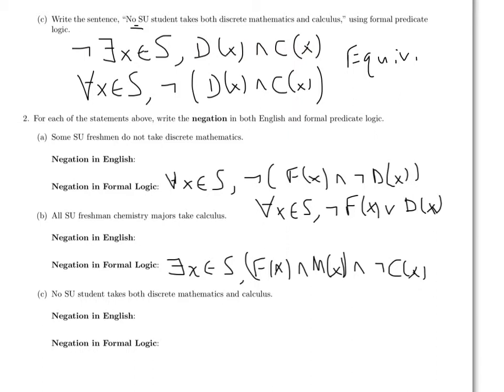So the negation of not there exists X in S is that there exists X in S. And if you write that in English, then it makes sense that if someone says no SU student takes both discrete math and calculus, and you think that's a lie, that means you believe that there is some SU student who takes both discrete math and calculus. And that's what that says right there.